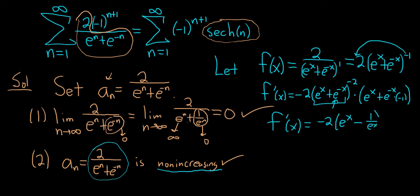And then on the bottom, we have e to the x plus e to the negative x squared.